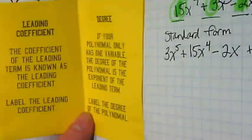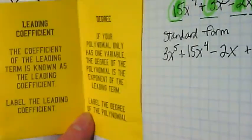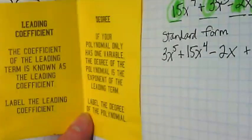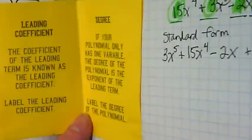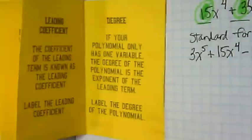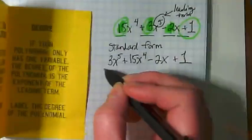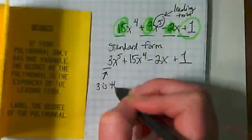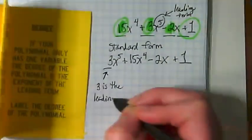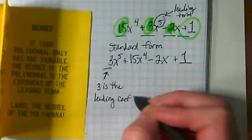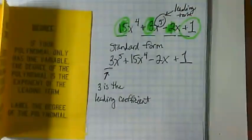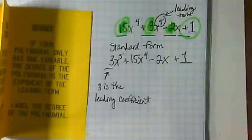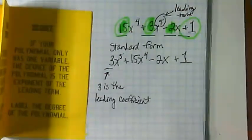In our last couple pages, we're going to talk about leading coefficient and then degree. The coefficient of the leading term is known as the leading coefficient. Label the leading coefficient. 3 is our leading coefficient because it is the number in front of the variable with the highest exponent.